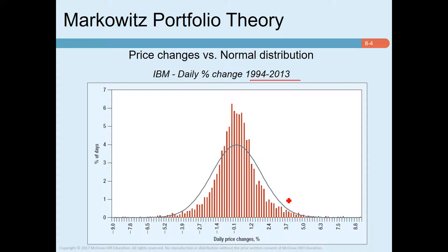A normal distribution can be completely defined by two numbers: the average, or expected return, and the variance, or standard deviation. That is why we discussed calculating expected return and standard deviation in the last chapter — they are not arbitrary measures. If returns are normally distributed, then expected return and standard deviation are the only two measures an investor needs to consider.